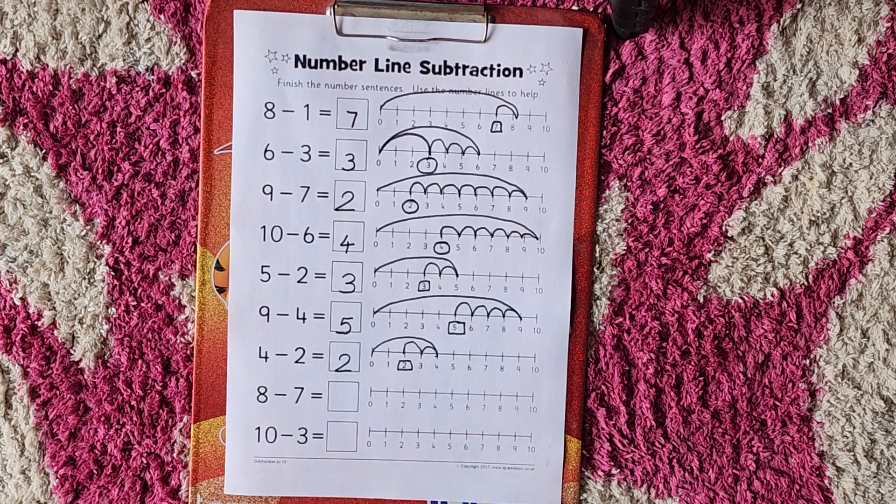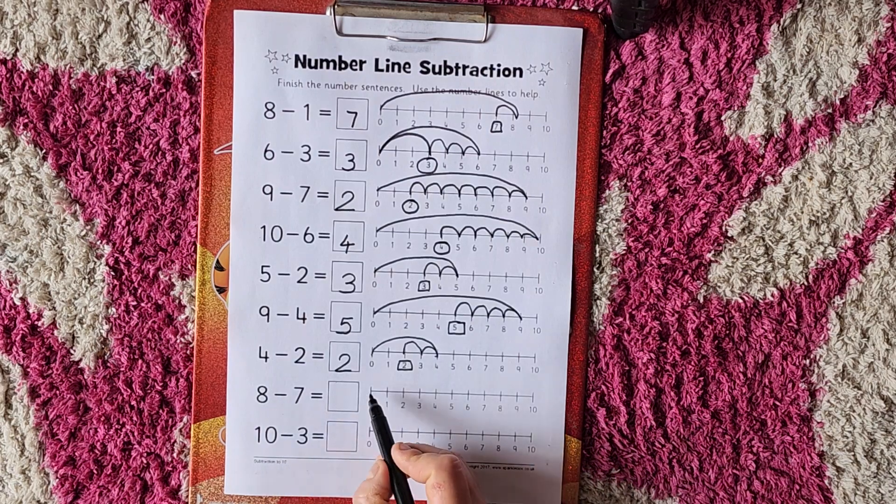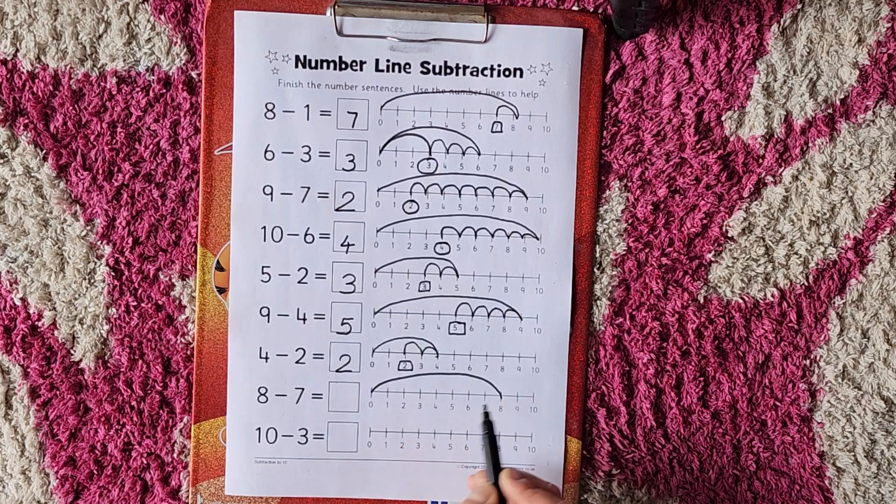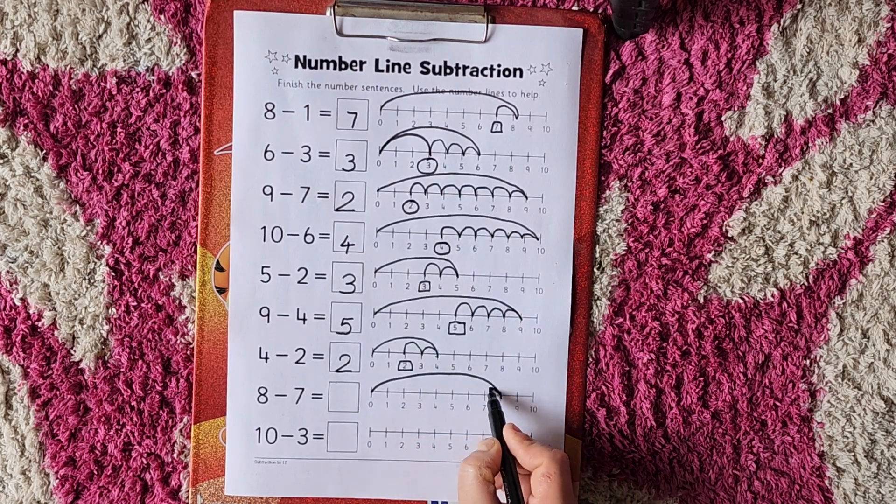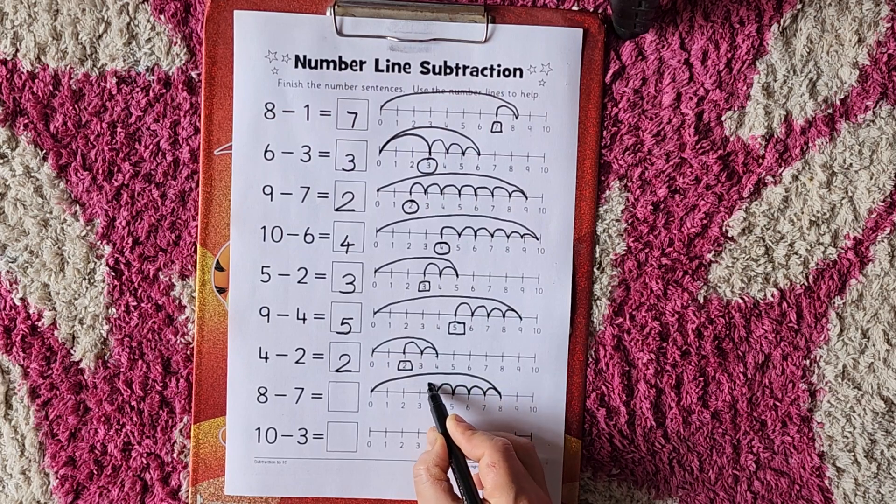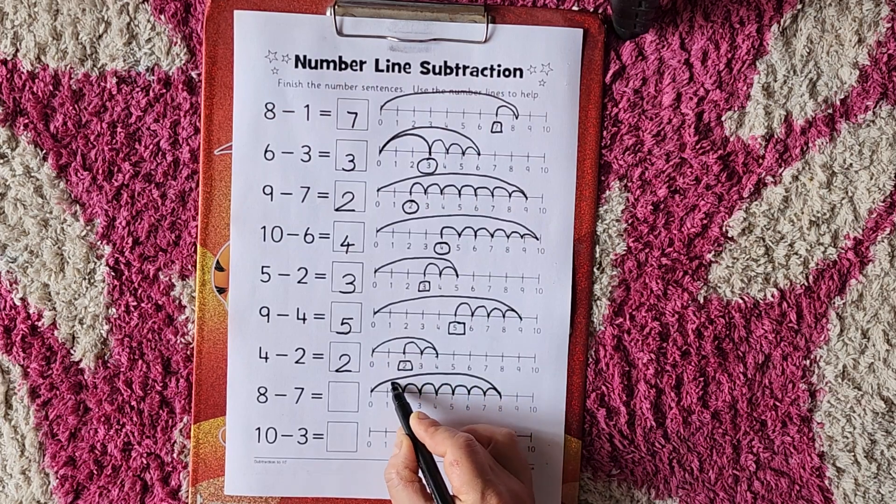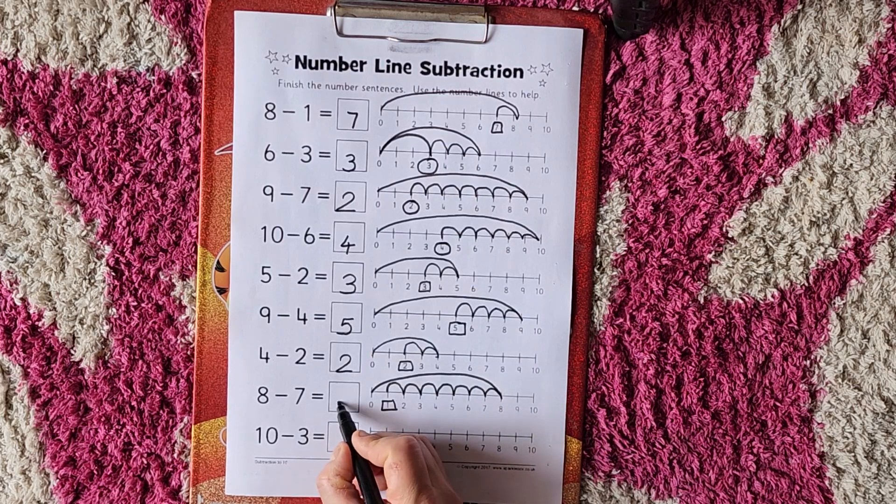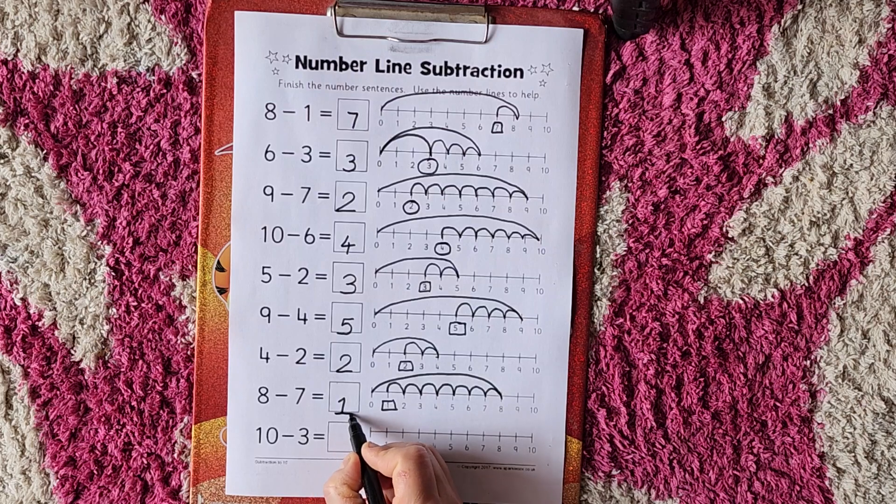Next is 8 minus 7. Put the pencil on 0, straight away go to 8. Now 7 steps back. 1, 2, 3, 4, 5, 6, 7. So 8 minus 7 is equal to 1. Very good.